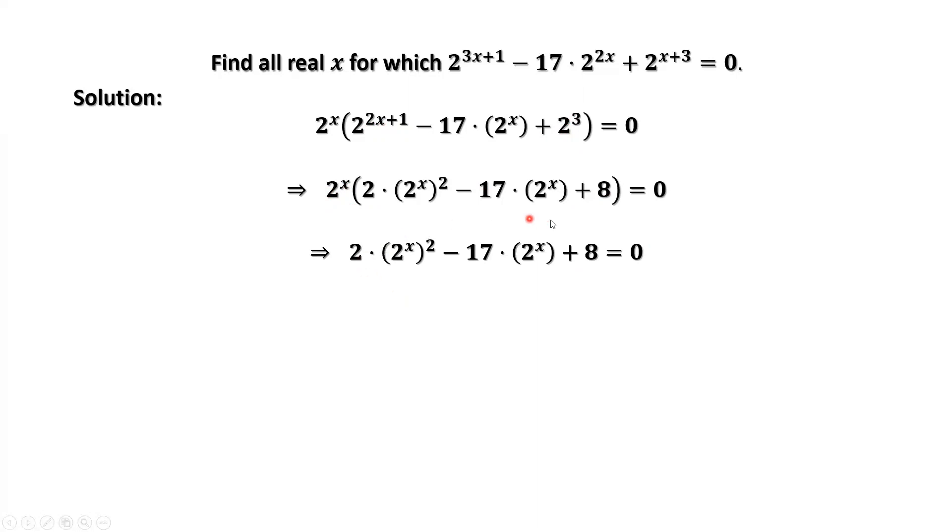This is the equation about 2 to the power of x. Therefore, we let y equals 2 to the power of x. Replace 2 to the power of x by y for this equation. Then we have 2 times y squared minus 17 times y plus 8 equals 0.